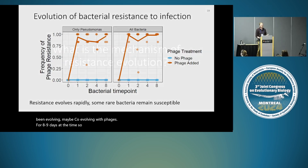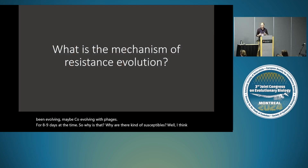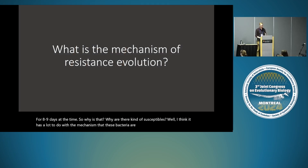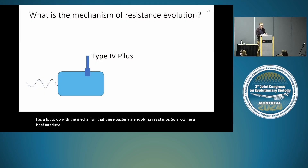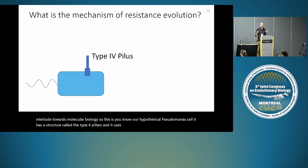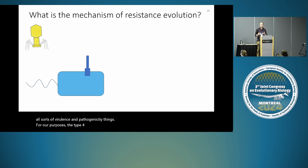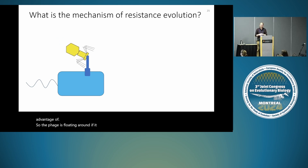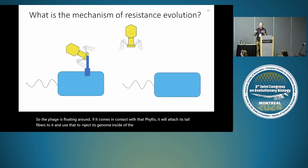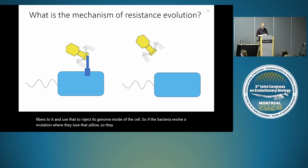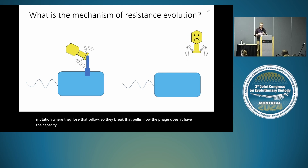So why are there susceptibles? I think it has a lot to do with the mechanism by which these bacteria are evolving resistance. Allow me a brief interlude towards molecular biology. This is our hypothetical Pseudomonas cell — it has a structure called the type 4 pilus, which it uses for virulence and pathogenicity. The type 4 pilus is also the structure that the phage hijacks: when the phage comes in contact with that pilus, it attaches its tail fibers and uses that to inject its genome inside the cell. So if the bacteria evolve a mutation where they lose or break that pilus, the phage can't attach and you get a very happy bacteria.